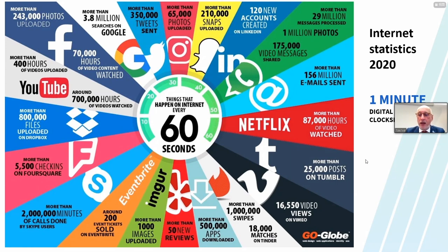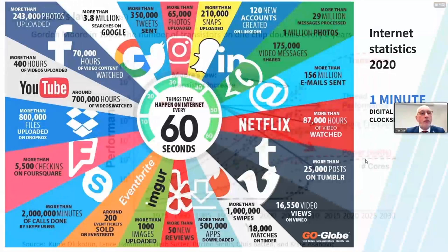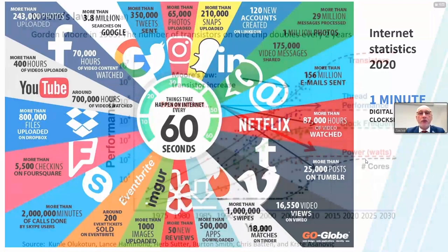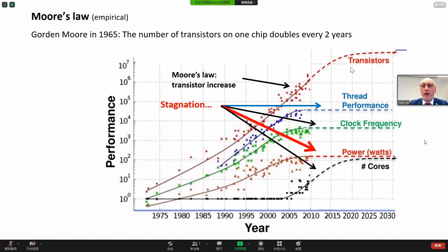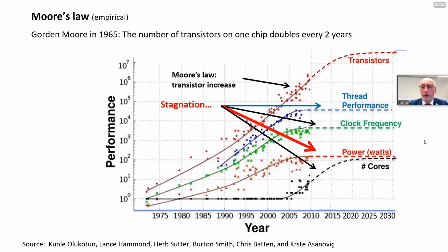This very high speed of communication relates to the classical law of Moore, defined in 1965 — just an empirical statement where he said that the number of transistors on one chip doubles every two years. This has been the case for many years, but nowadays we see a stagnation, a saturation, because everything gets so miniaturized that we really approach the atomic level.